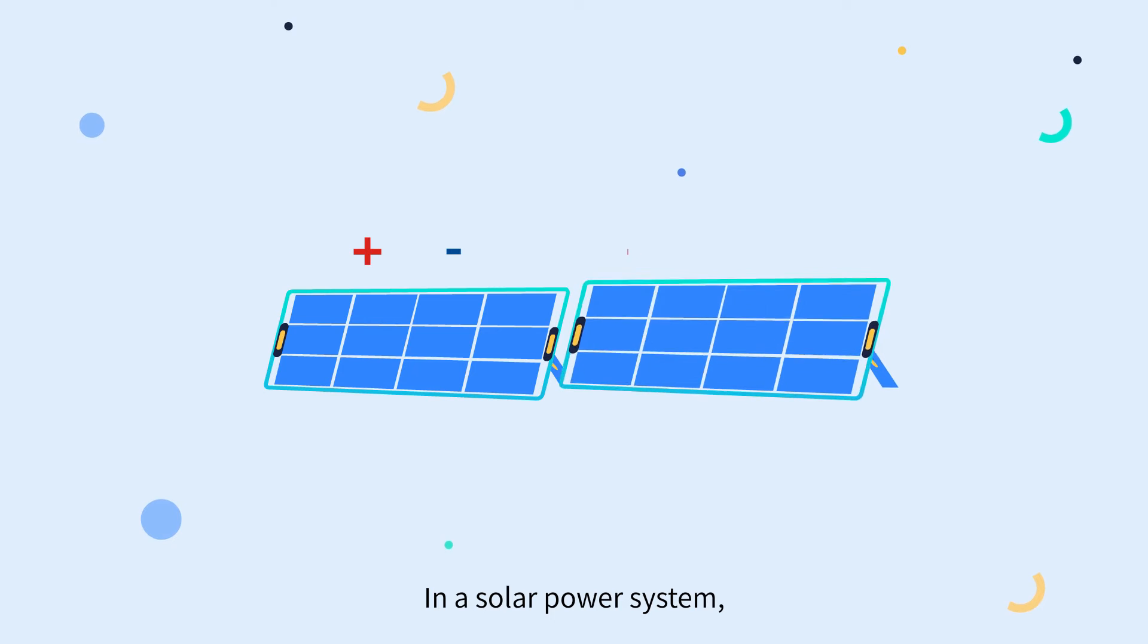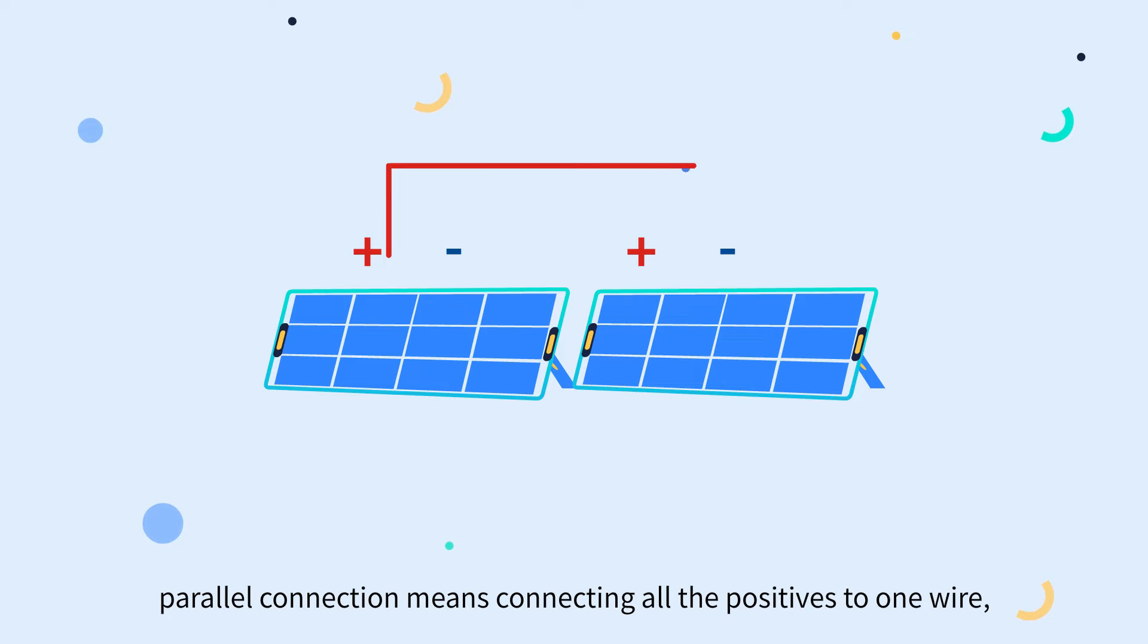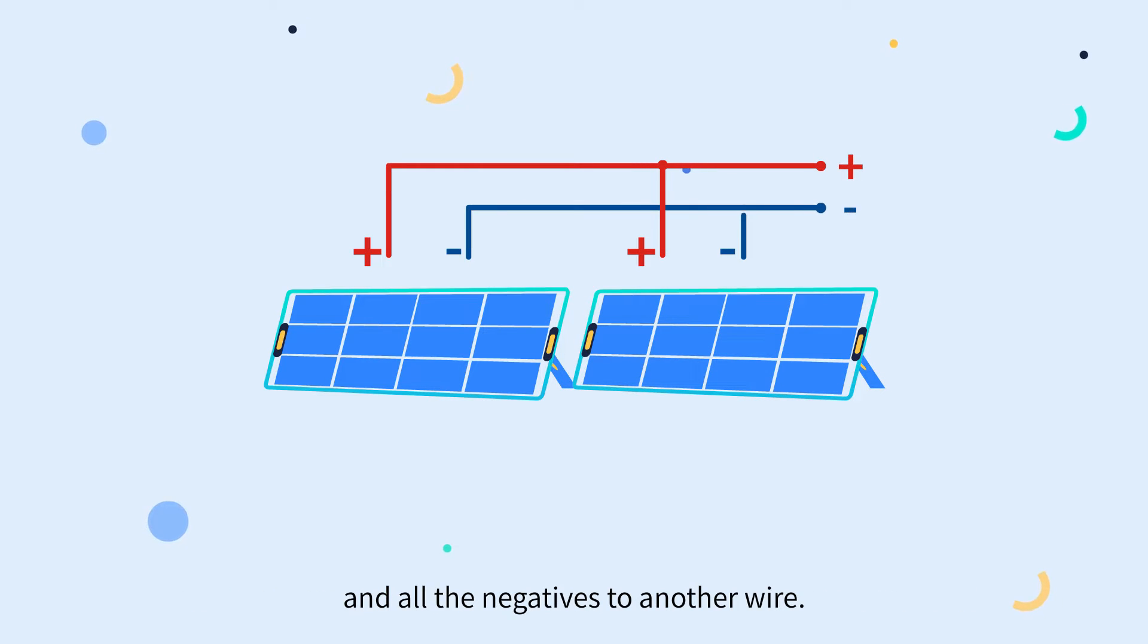In a solar power system, parallel connection means connecting all the positives to one wire and all the negatives to another wire.